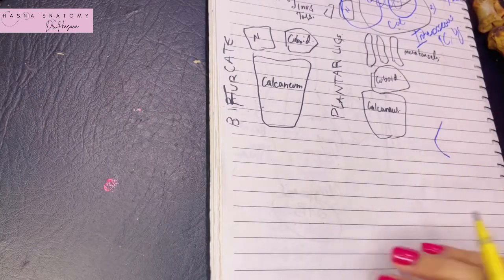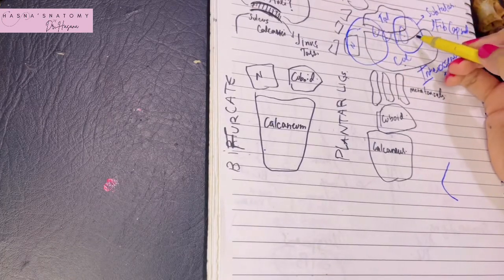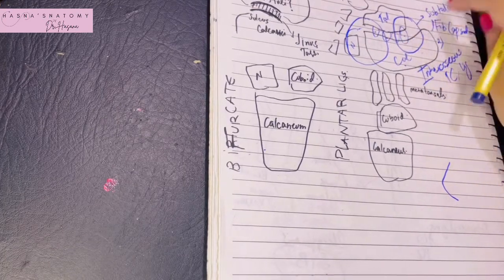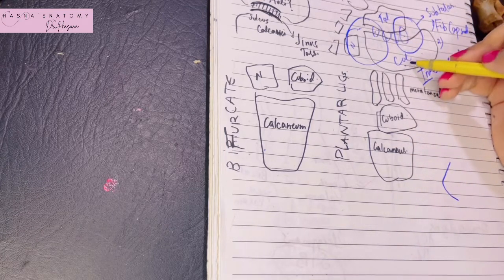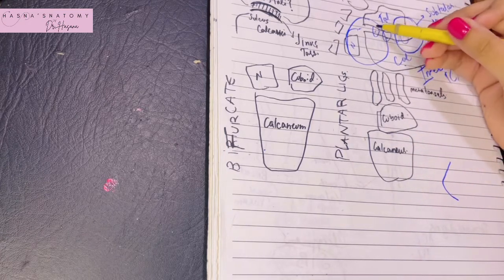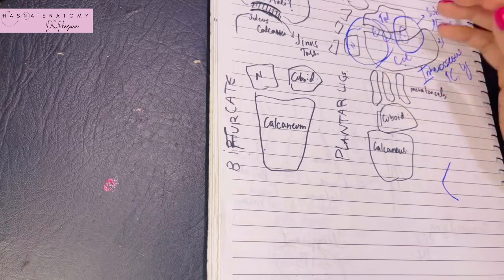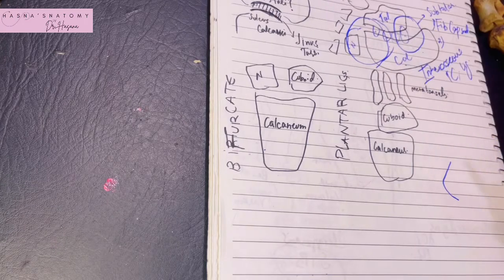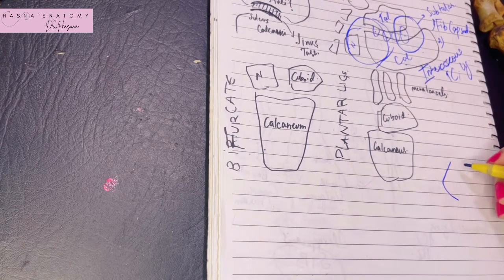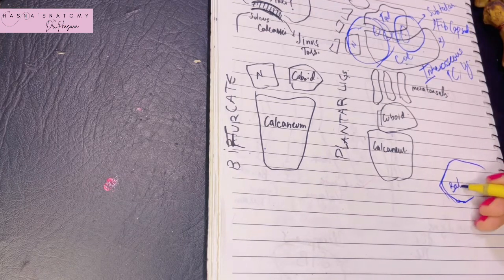The talo-calcaneo-navicular joint: as mentioned earlier, the talus and calcaneus had anterior-medial articulations and a posterior articulation. The posterior was known as the subtalar joint. The anterior-medial articulation between the talus and calcaneus are involved in the formation of the talo-calcaneo-navicular joint. It is a ball-and-socket joint because the head of the talus forms the ball.